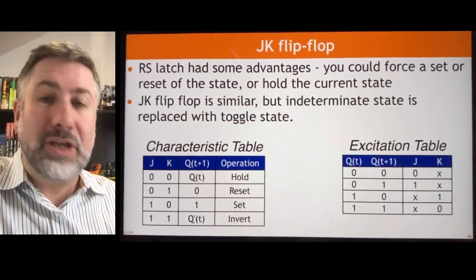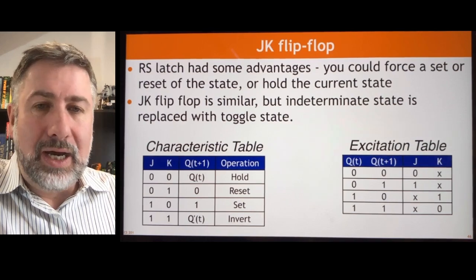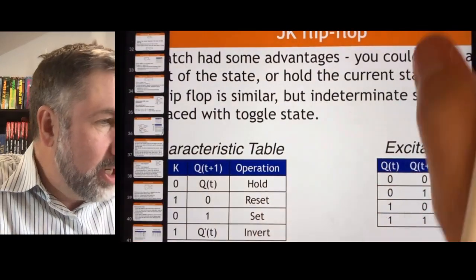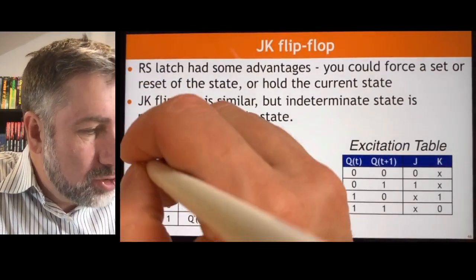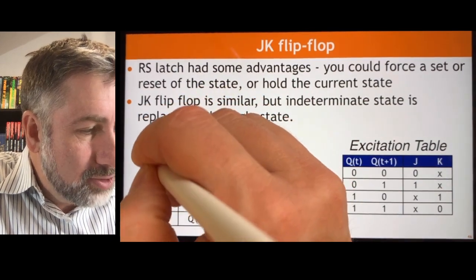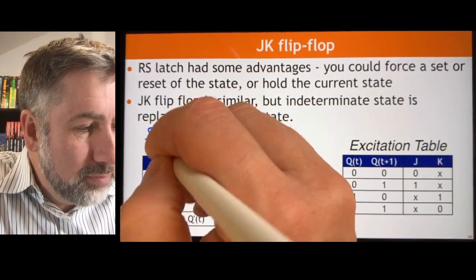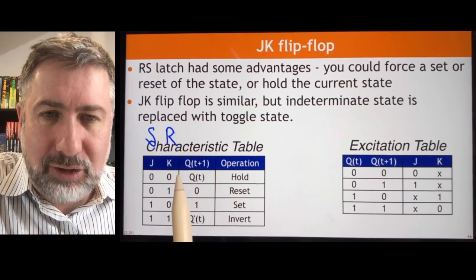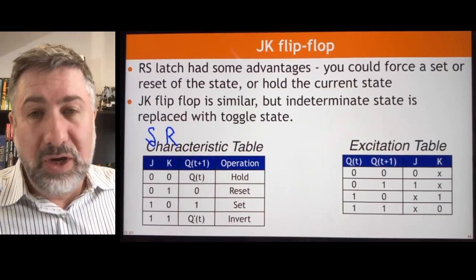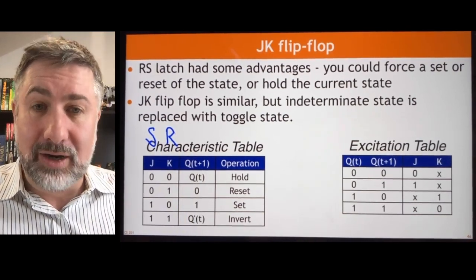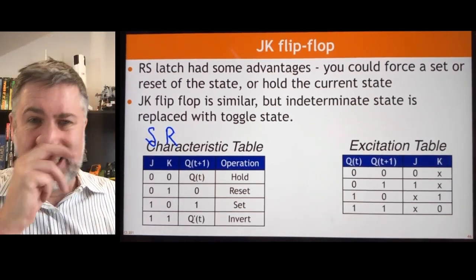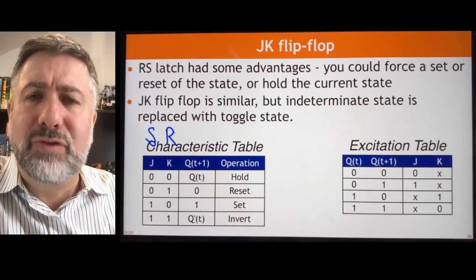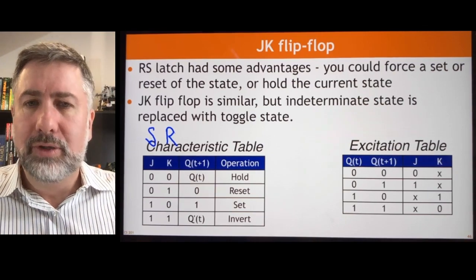This is what we call a JK flip-flop, and you're going to use this a lot. One way to remember which input does which: J is sort of like S because it's curvy like an S, and K is sort of like R because it looks similar. So J is like S (set), K is like R (reset), and the inversion is a different kind of race condition that is stable, predictable, and makes sense.